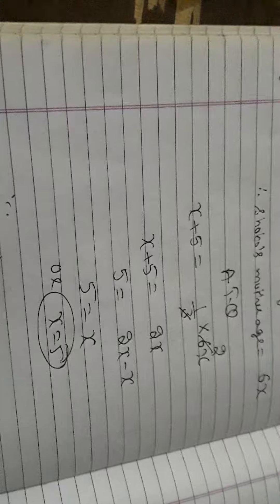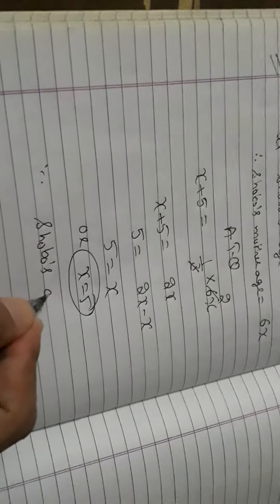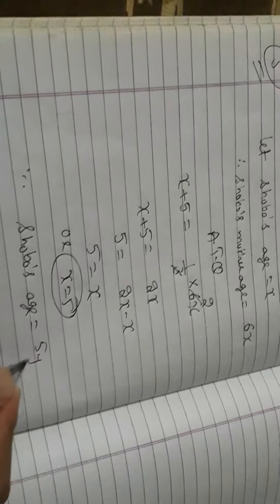So therefore, Shubo's present age is 5 years.